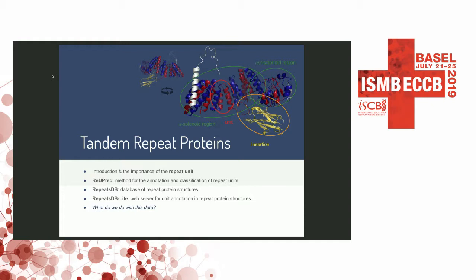Structural repeats differ from globular proteins because they don't have a hydrophobic core — they have a hydrophobic axis. They are made by repetition of the same modules, which we call units. Each single unit is stabilized by interactions with its flanking units. Whatever is not part of these modules is an insertion, and a group of flanking similar modules is called a region.